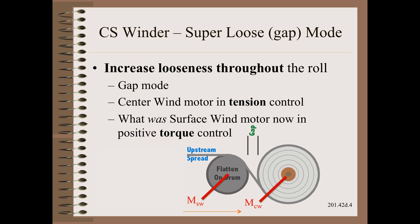In the two-day web handling class, we showed how the TNTs can be adjusted so that the wound roll could be made anywhere in a range of tight to loose. In the two-day winding class of Web101, we described how the center surface wind motor torque split can be adjusted so that the wound roll can be made anywhere in a range of extra tight to extra loose. In the last clip, we introduced the super loose mode, even more loose than a surface or center winder can obtain.